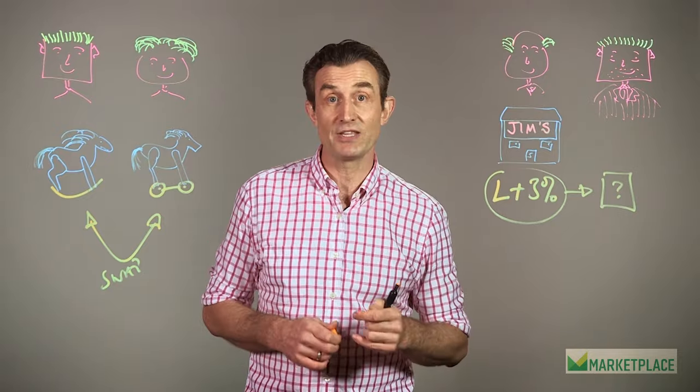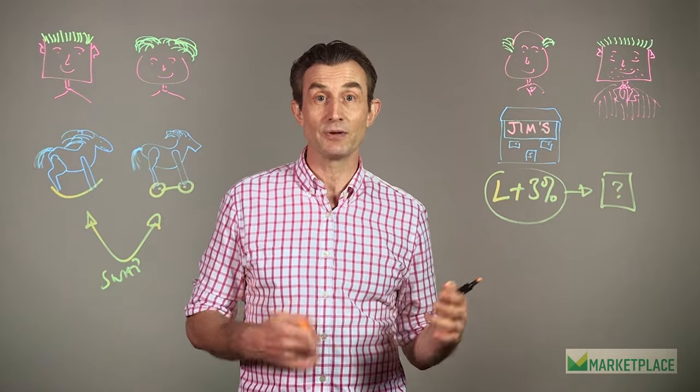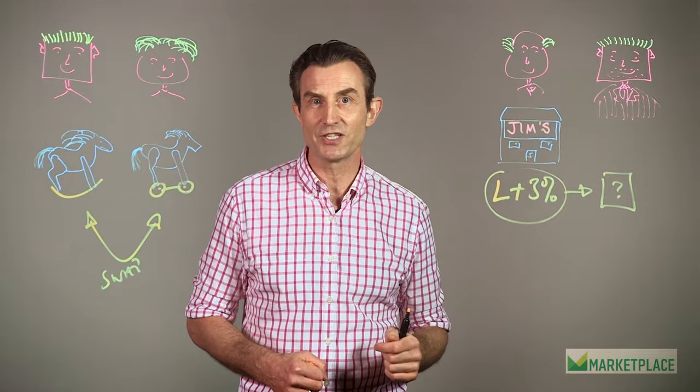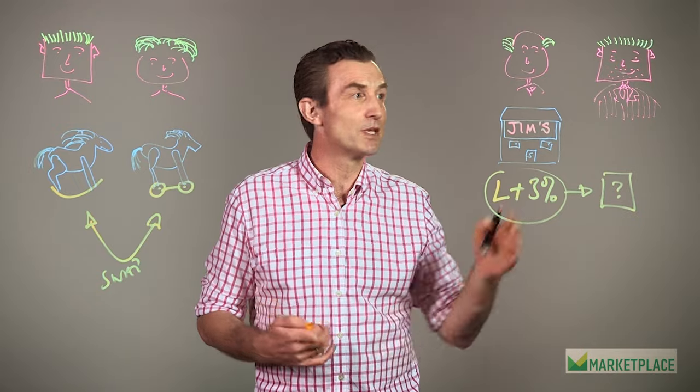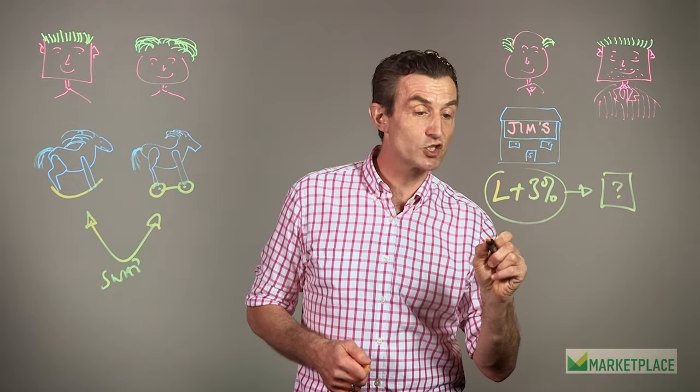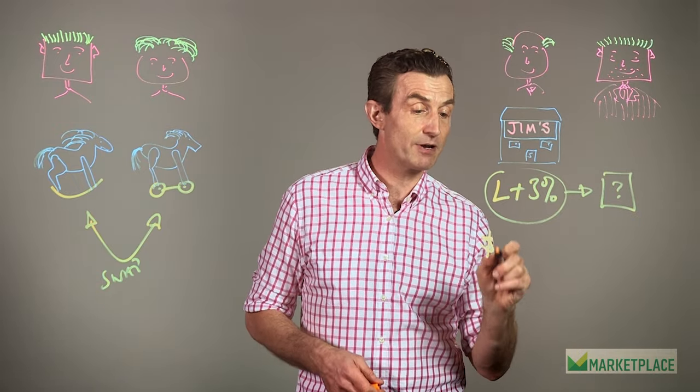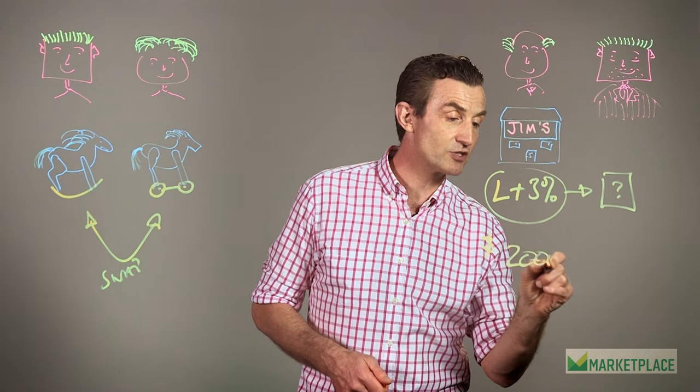So he goes to his friend, and he says, Bruce, can you help me with this loan? And Bruce says, I tell you what, why don't we do like what we did when we were kids and swap? And he's like, swap? What are you talking about? So Bruce says, what we're going to do is we're going to swap your floating variable rate for a fixed rate of $2,000.